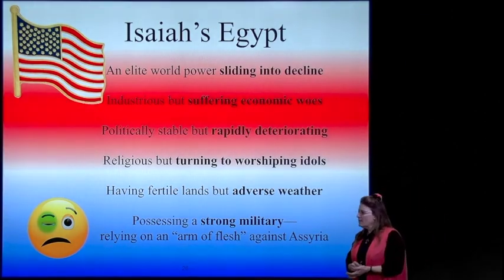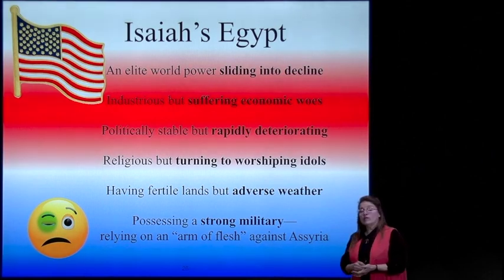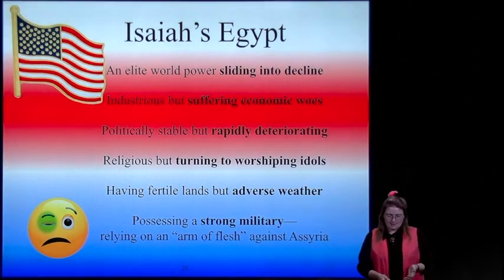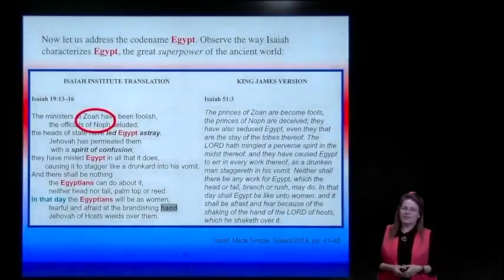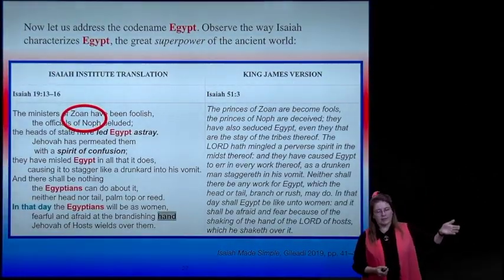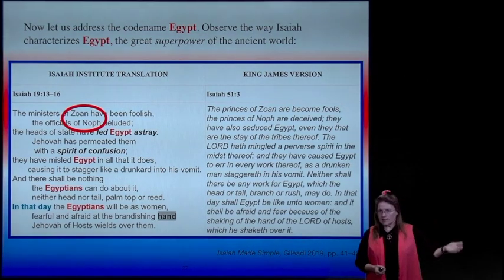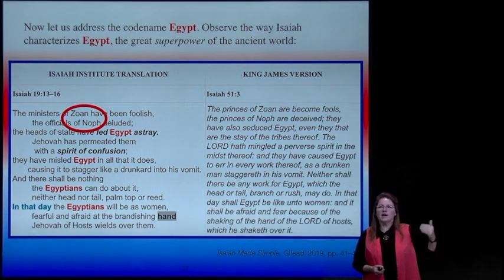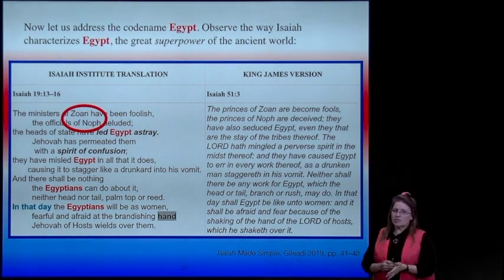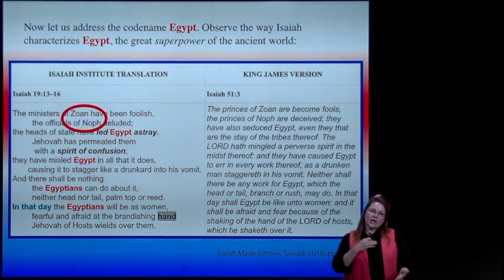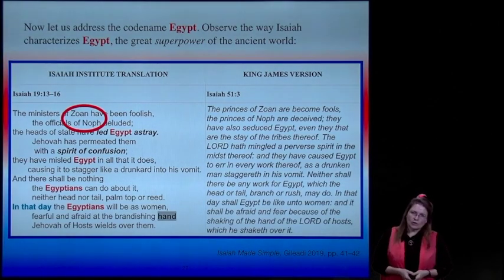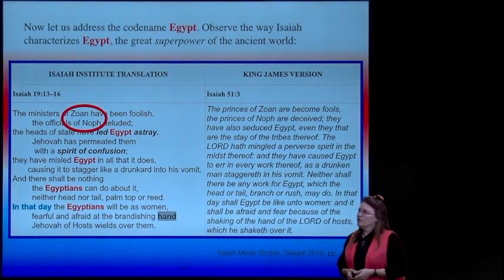Possessing a strong military but relying on the arm of flesh against Assyria—that was forbidden in the Old Testament. God wanted us to rely on him. He is our deliverer, our salvation, not our armies and our military. Now let's address the code name Egypt and observe the way Egypt is depicted as a great superpower of the ancient world. The ministers of Noth have been foolish, the officials of Noth deluded—this is in Isaiah 19.